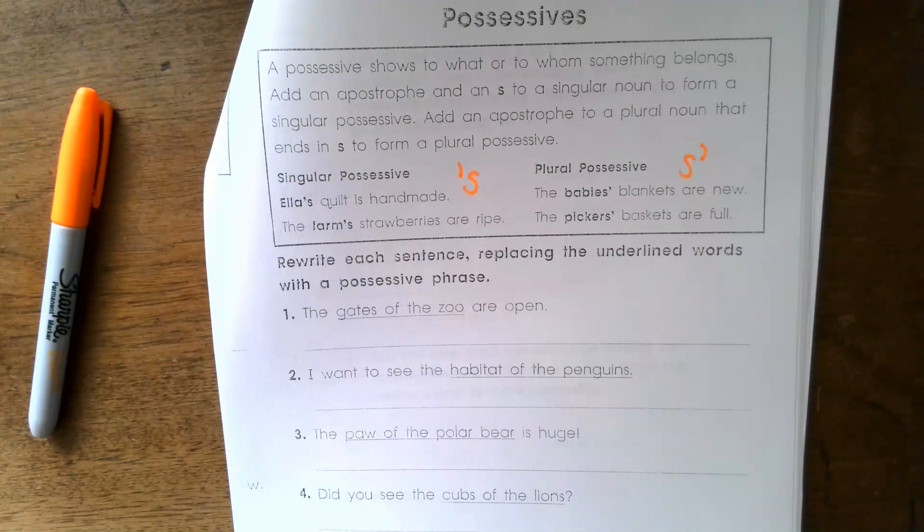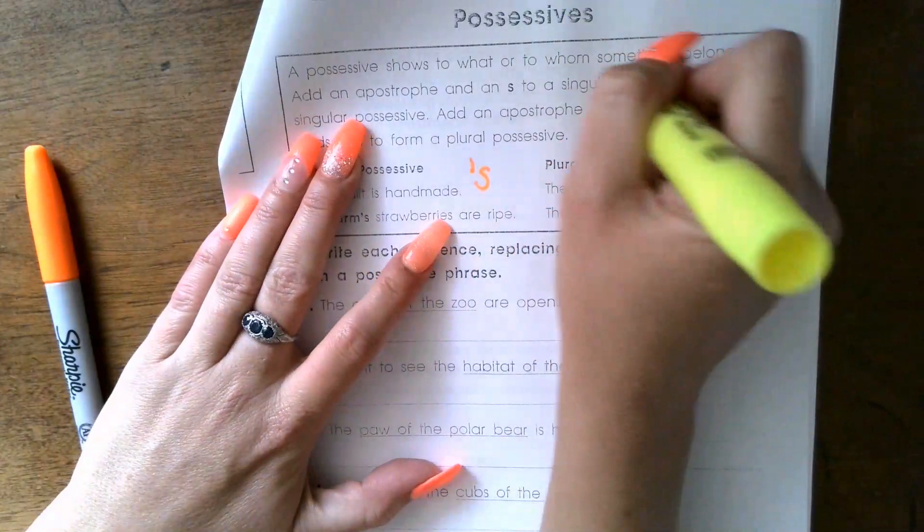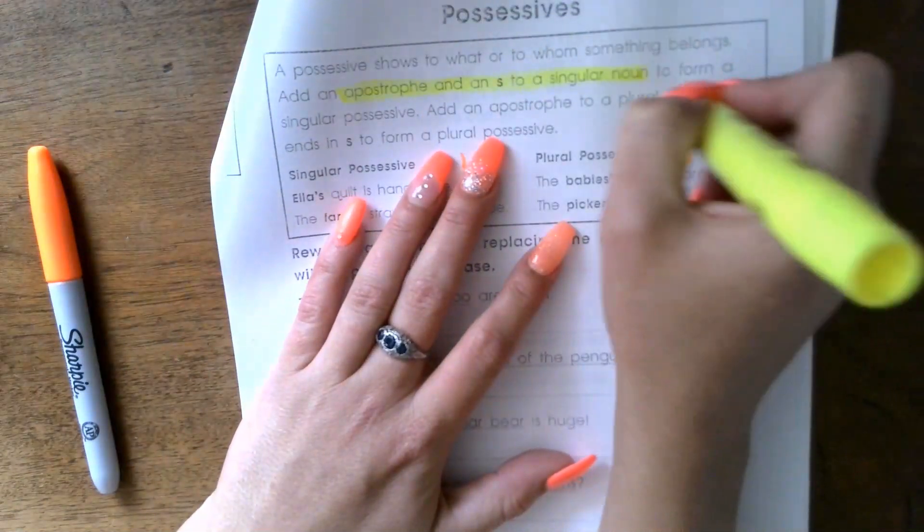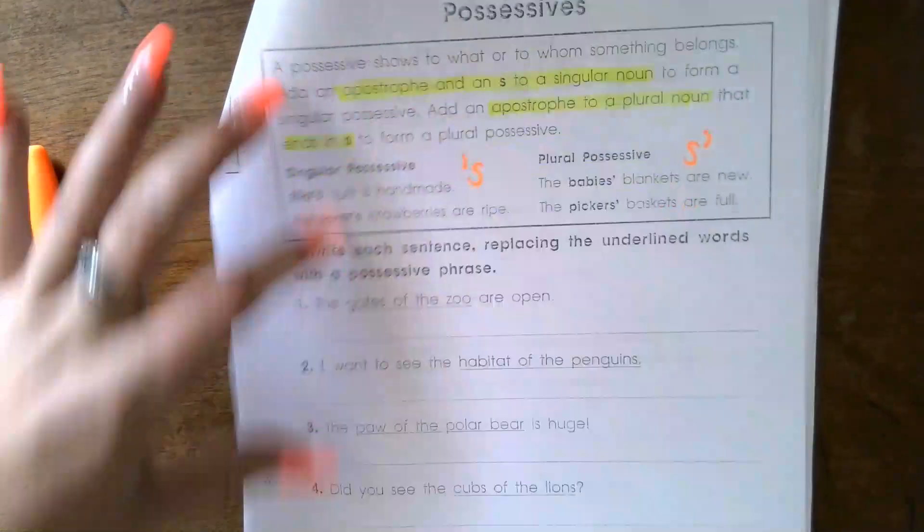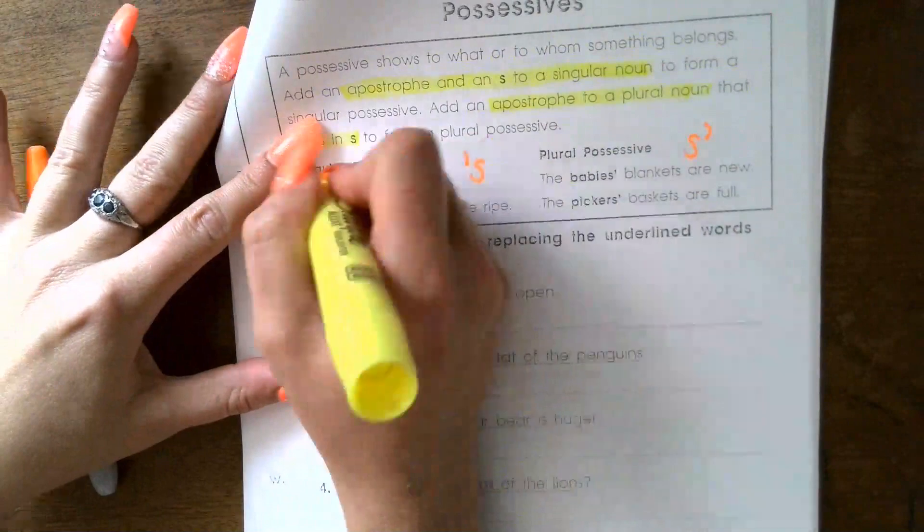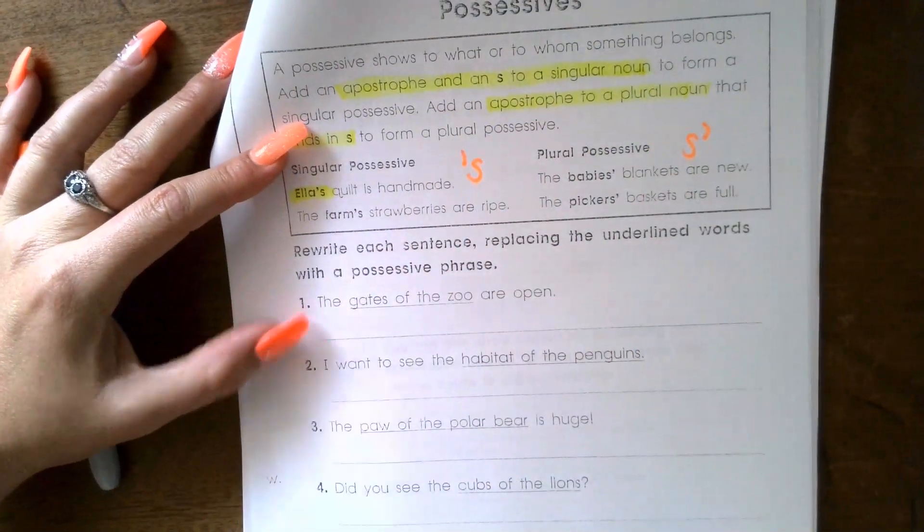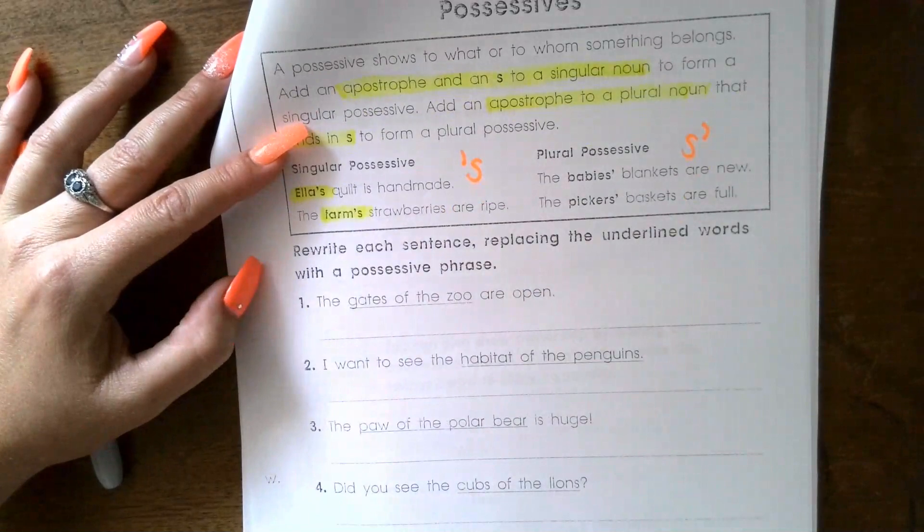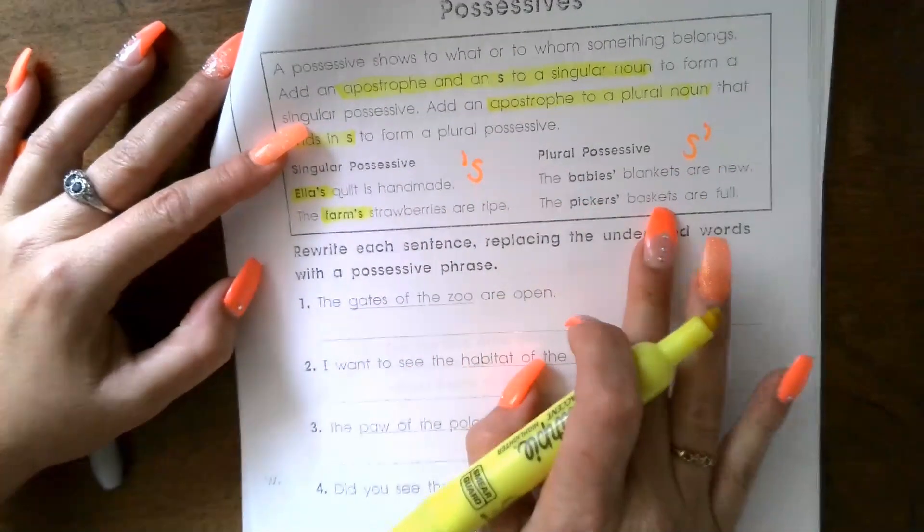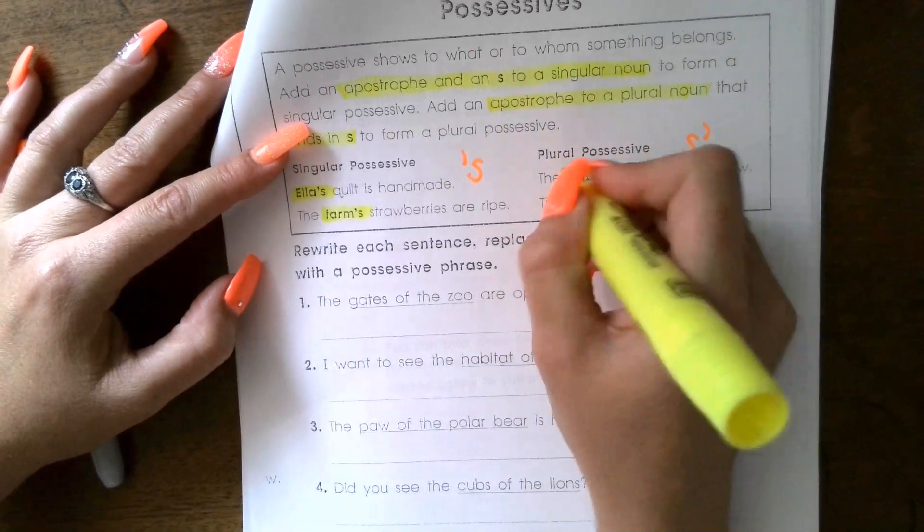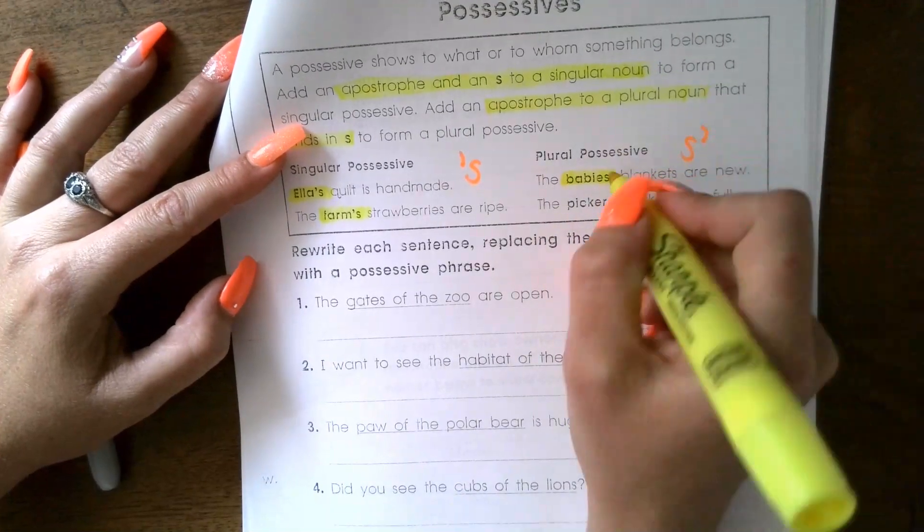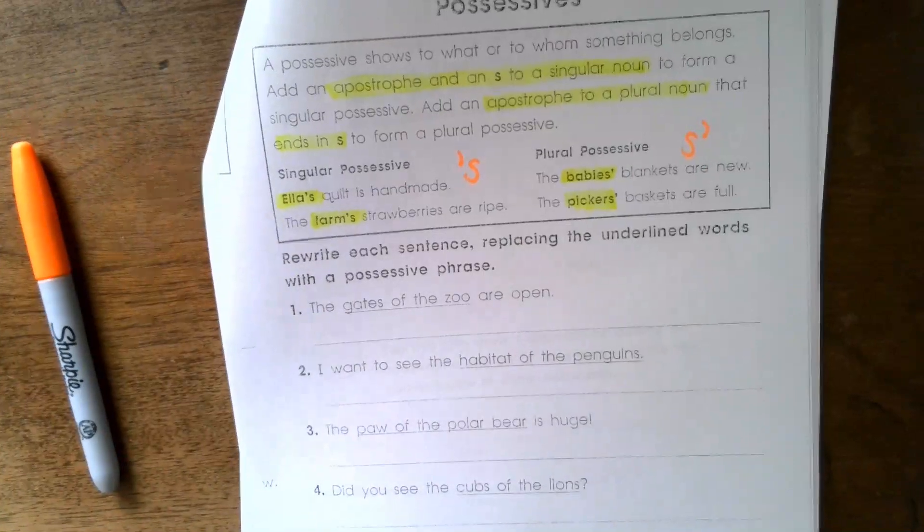A possessive shows to what or to whom something belongs. Add an apostrophe and an S to a singular noun to form a singular possessive. Add an apostrophe to a plural noun that ends in S to form a plural possessive. So singular possessive: Ella's quilt - Ella is only one, so we put apostrophe S. The farm's strawberries are ripe - there's only one farm, so apostrophe S. Now we go to plural possessives. The babies' blankets are new - there's plural babies, it ends in an S, so we put an apostrophe at the end. The pickers' baskets are full - it ends in an S plural, so apostrophe at the end.